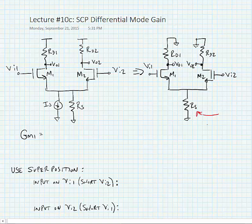We're going to assume that RD1 is equal to RD2, which we'll just call RD. We're also going to assume that RD is significantly smaller than the output resistance of the transistor. Now let's find the transconductance for each of these transistors.